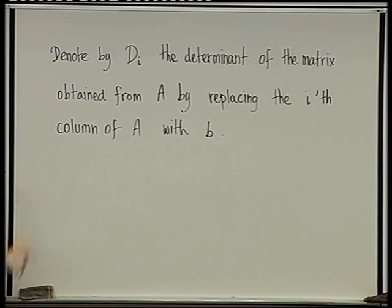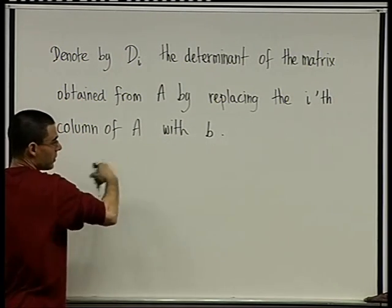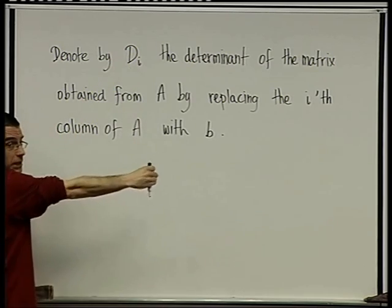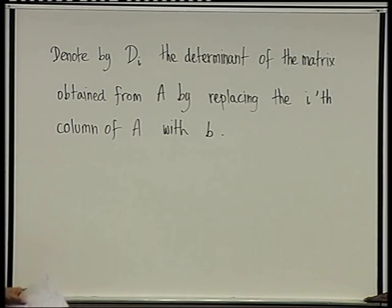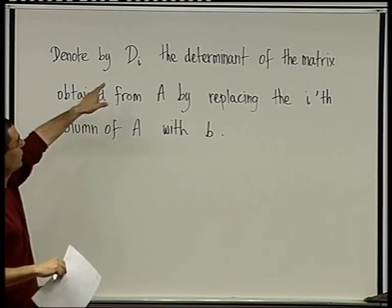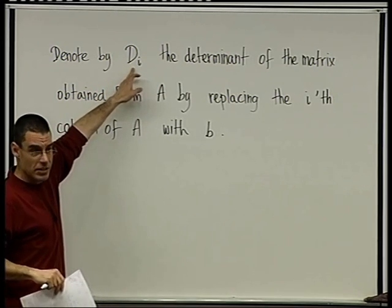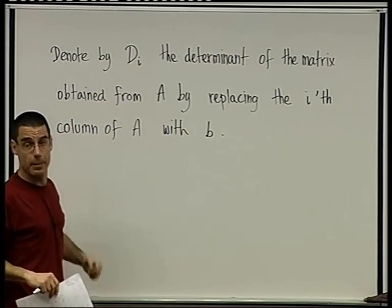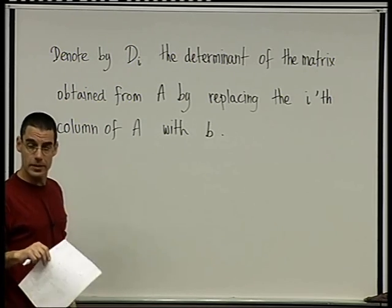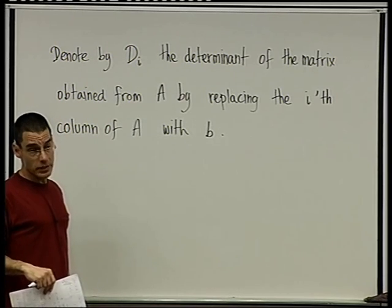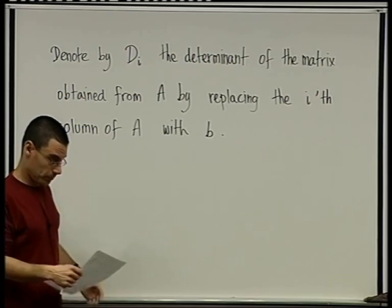So in each of these you replace the relevant the i-th column with B and calculate determinant. So how many determinants do I need to calculate here? n determinants, each of which is an n by n determinant. That's some work. There's some work there.